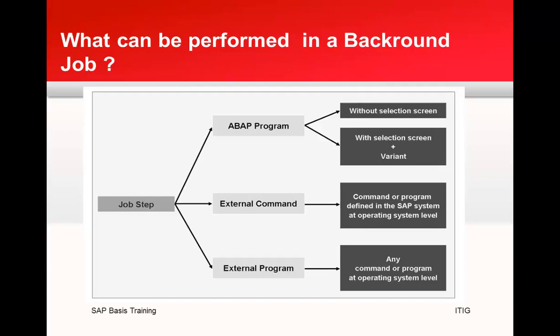Every ABAP program can be scheduled as a step of a job. If the ABAP program has one or more selection screens, you must create the required input in advance in the form of a variant. A variant makes it possible to run an ABAP program in the background even though the program requires input — the values stored in the variant are used during execution. If the program has screen output, it is directed to a spool list.